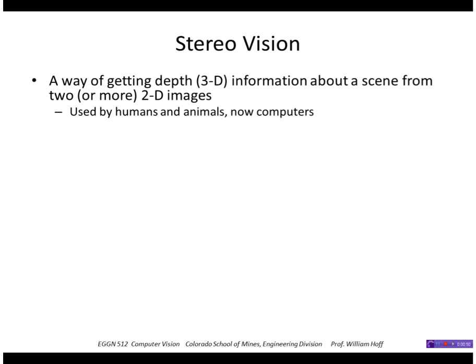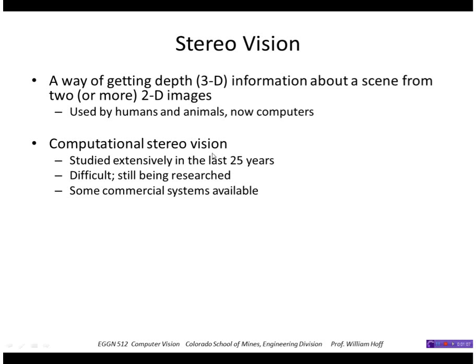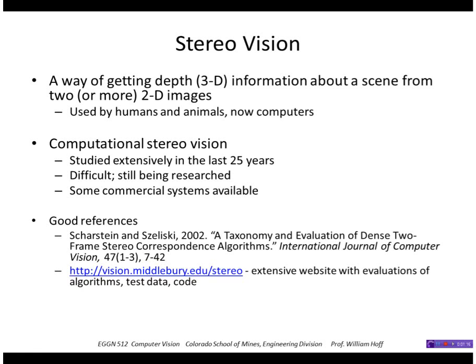Stereo vision is a way of getting 3D information from two or more 2D images. With three cameras that would be called trinocular vision. This is used by humans and animals and also now computers. Computational stereo vision has been studied extensively in the last 25 years, still a difficult problem, but some commercial systems are available. Some good references for reviews of stereo vision algorithms is shown here and a nice website with lots of code and test data and evaluations.